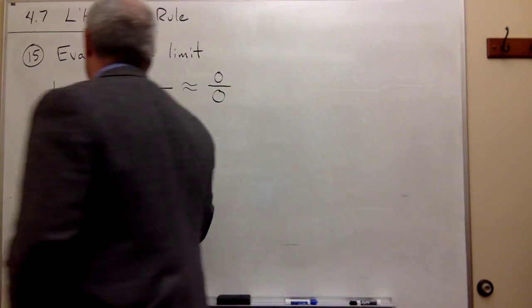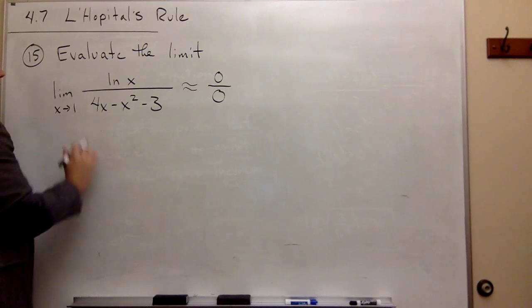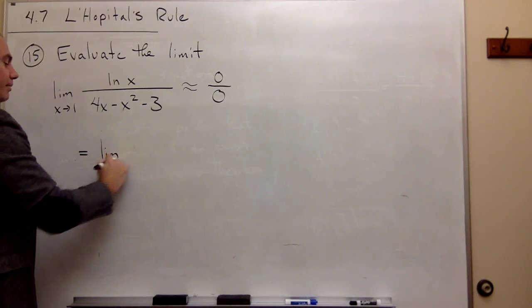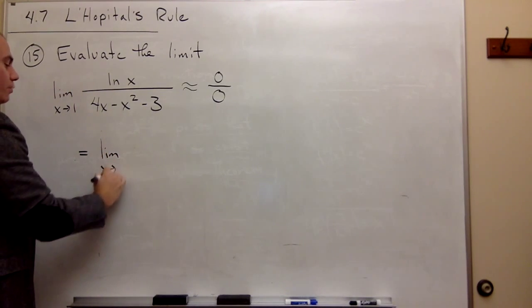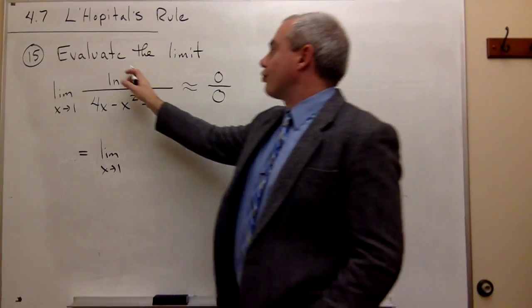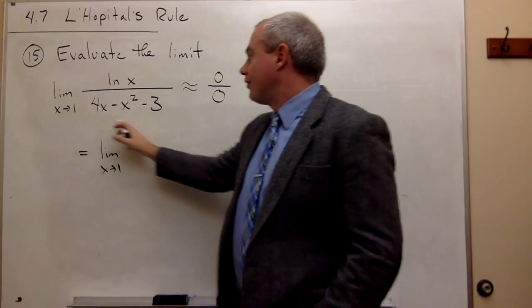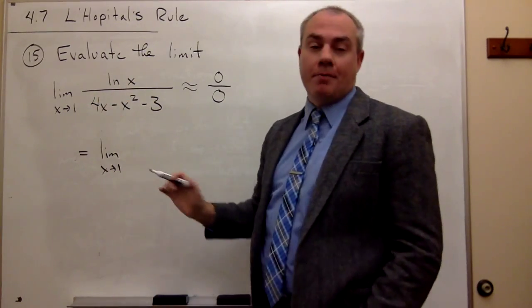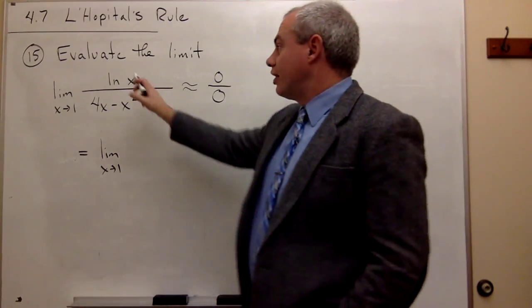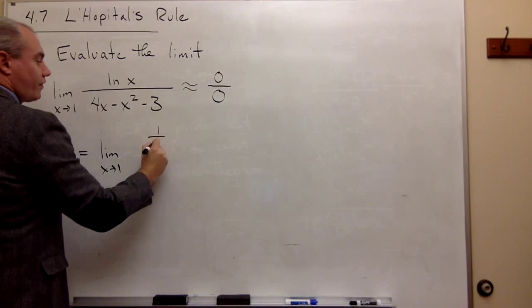And what L'Hôpital's rule tells me to do is I'm going to say that this is equal to, I'll rewrite my limit. This is the limit as x goes to 1. And now what I want to do is I want to take the derivative of the top and put it on the top, and the derivative of the bottom I'm going to put on the bottom. Okay, the derivative of natural log of x we know is 1 over x.